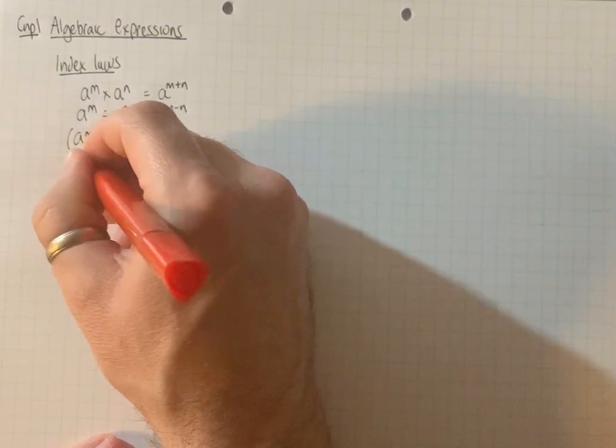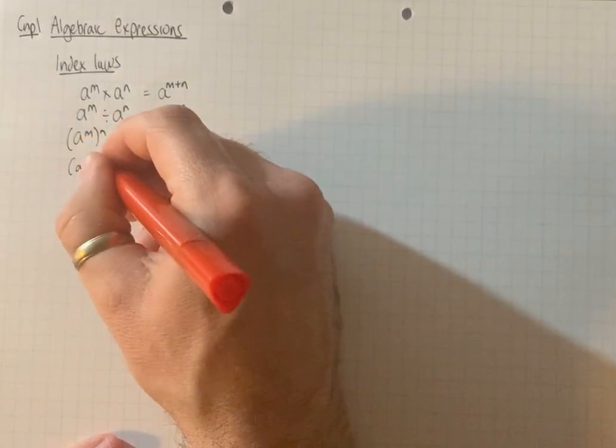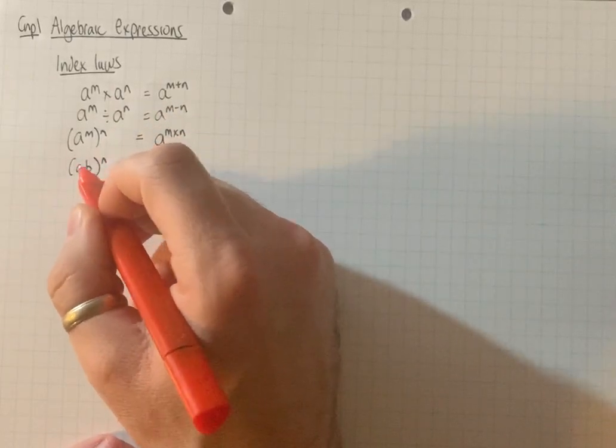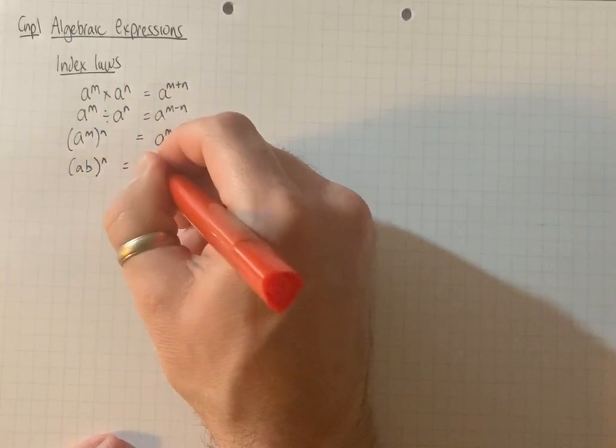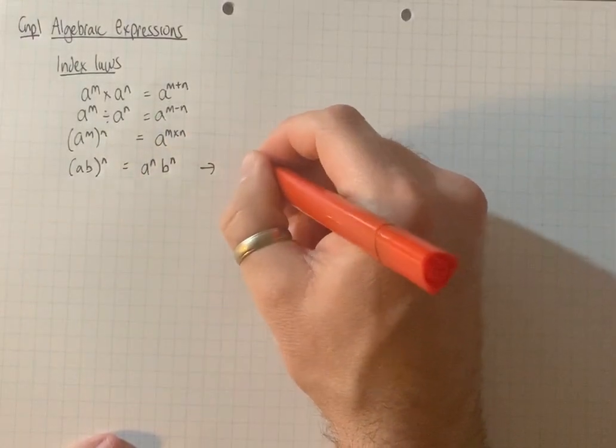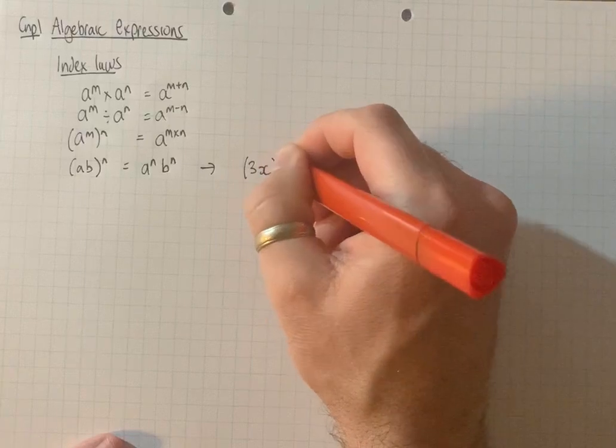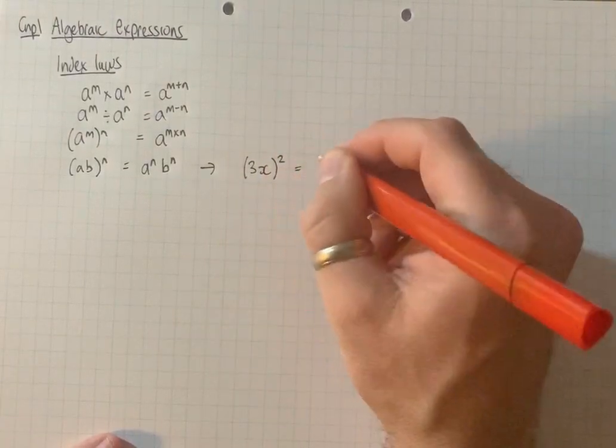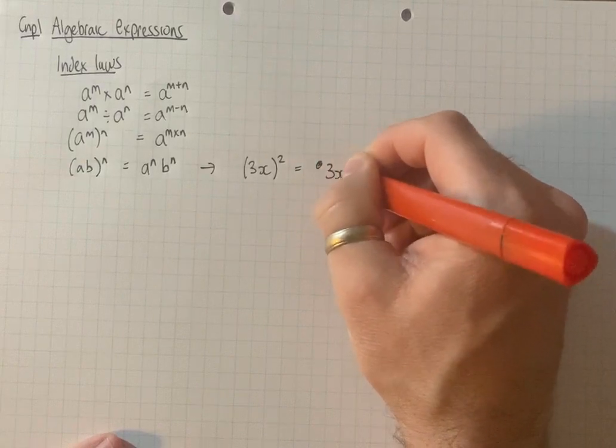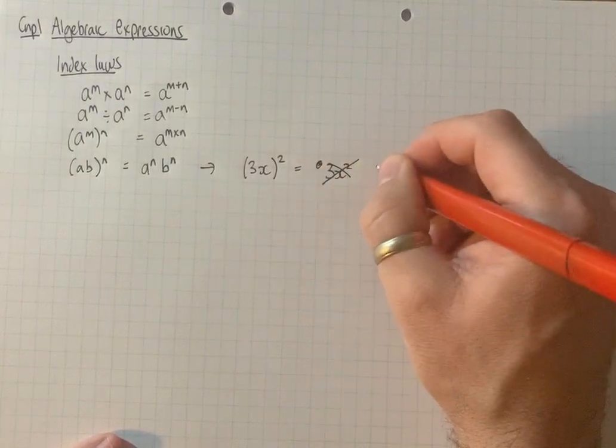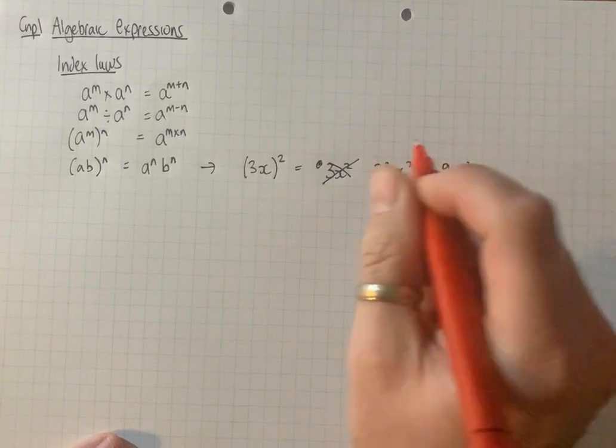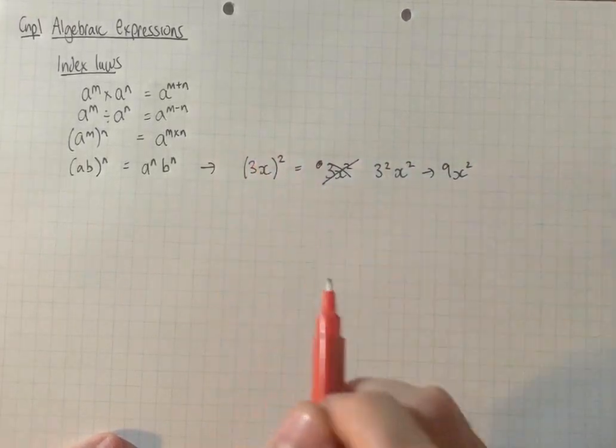And one that is worth remembering because you get a lot of errors here: when you've got a power applied to a bracket, it's applied to everything inside the bracket, so that's a to the n and b to the n. A good example here is something like 3x to the power of 2. A very common error is to write 3x squared, which is wrong because it's 3 squared x squared, or 9x squared. The power applies to everything inside the bracket.